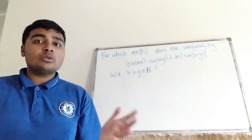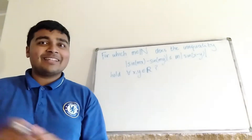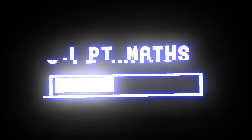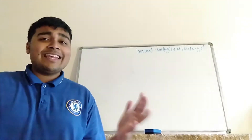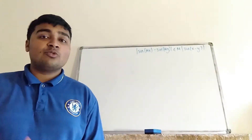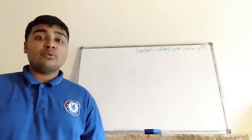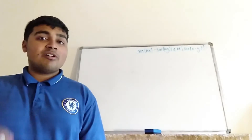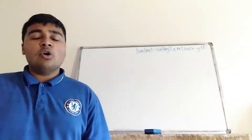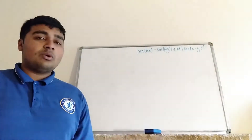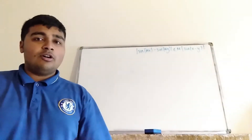If you want to have a go at this problem, pause the video now and give it a go for yourself. The answer to this problem is all even m. So if m is an even natural number, then this inequality holds for all real values of x and y. However, if m is odd and a natural number, then this inequality does not hold for all real x and y — i.e. there exists some x, y for which this inequality does not hold.